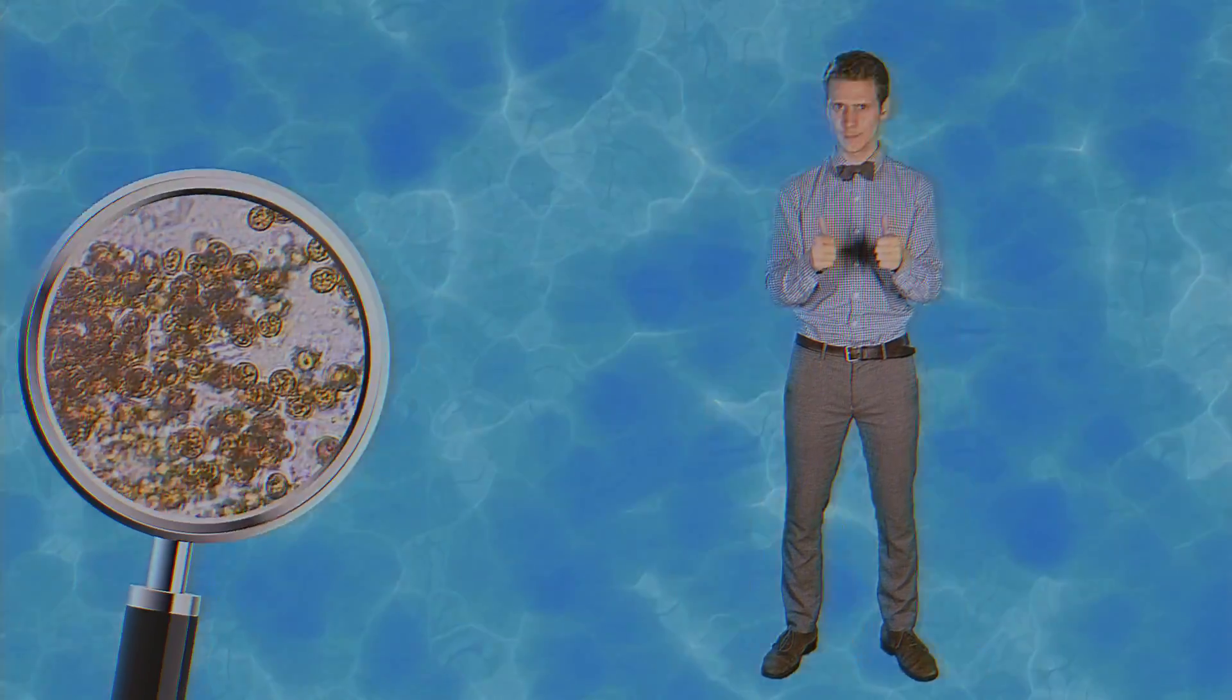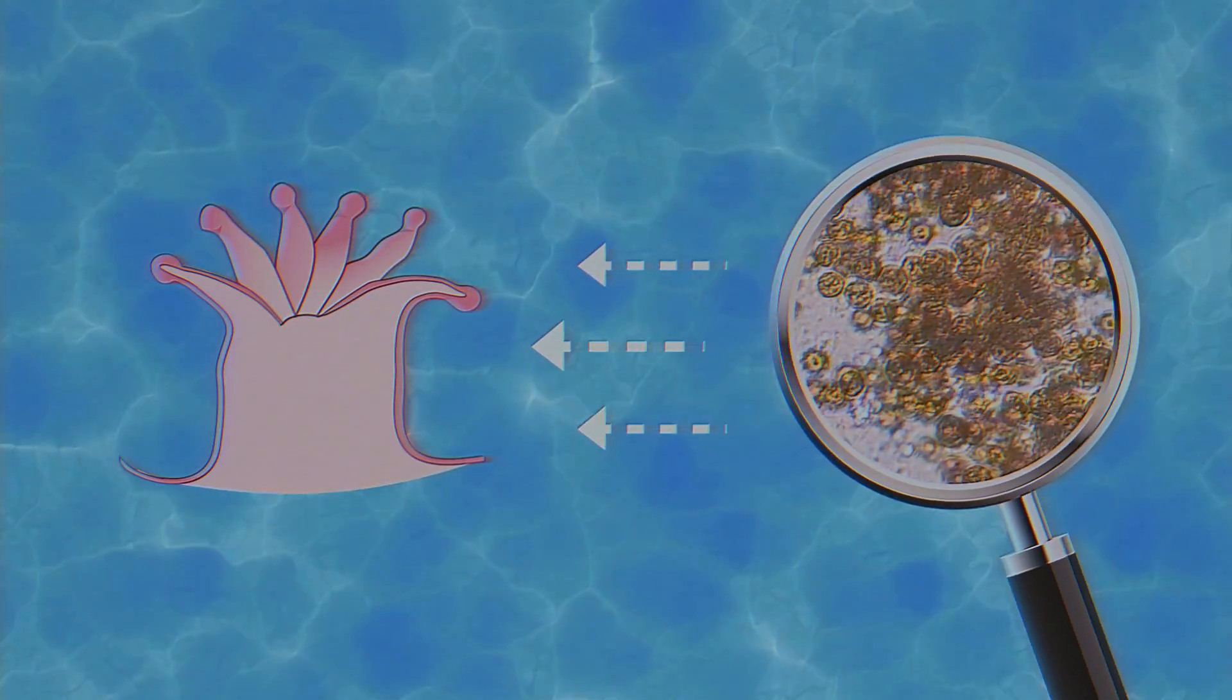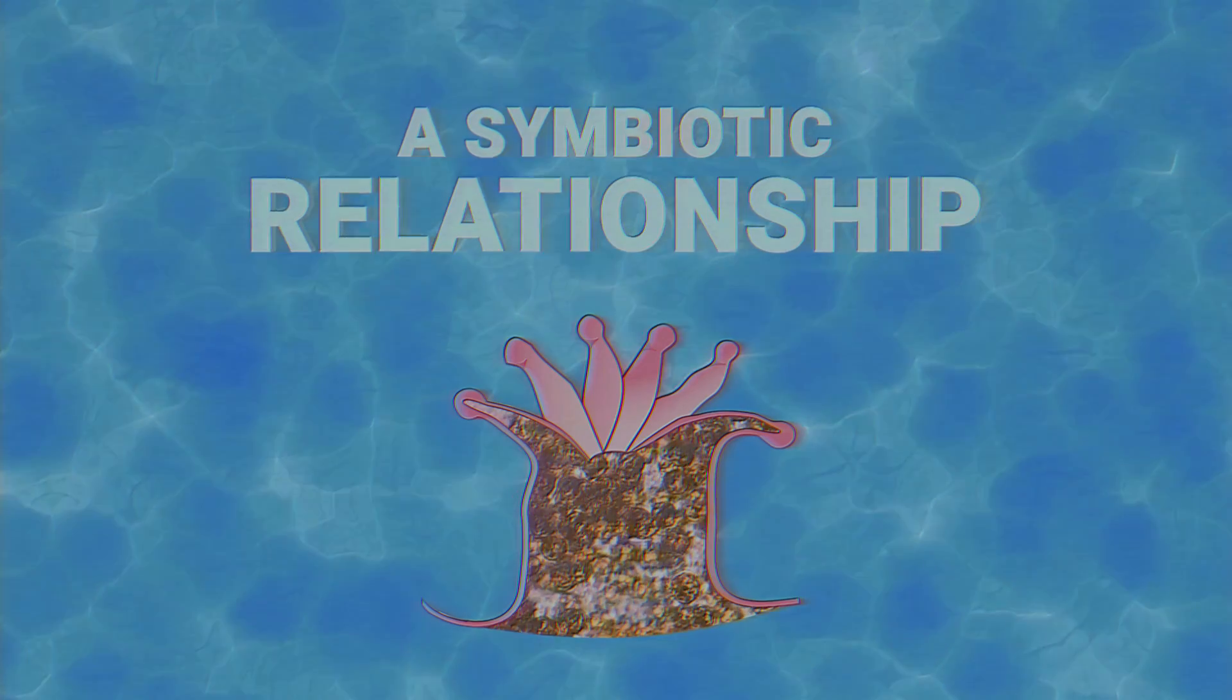So the polyp and the zooxanthellae are really good work buddies. The zooxanthellae photosynthesizes energy from the sun and shares that energy with the coral polyp. And the polyp says, right on zooxanthellae, thanks a lot. In exchange for that, I'm going to give you a home and some nutrients. It's what's called a symbiotic relationship.